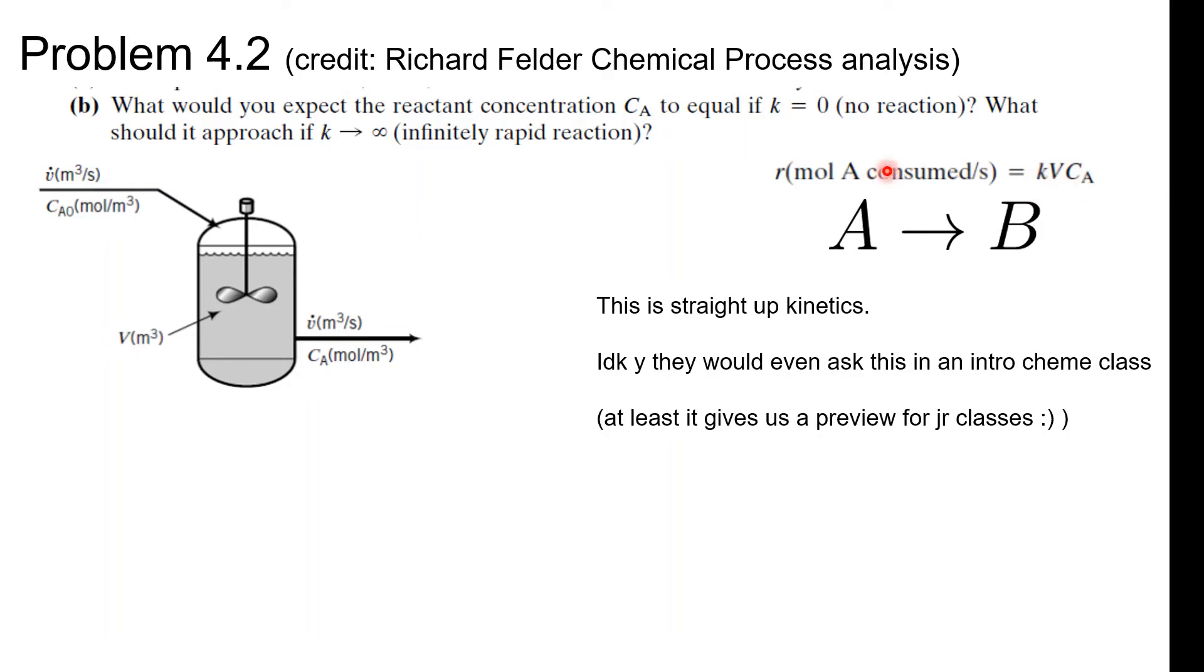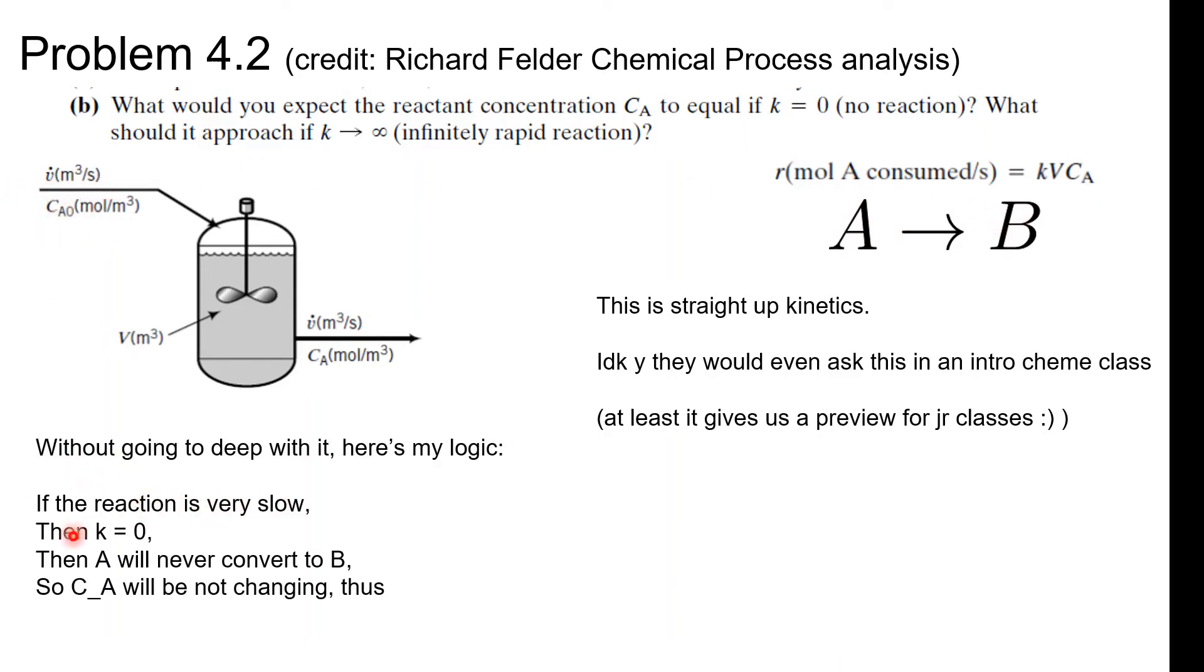Notice how there's this reaction rate constant K, the volume V, and the CA, and notice how it's moles per second. So if K equals zero, there's no reaction, right? So what do you think that means? If K equals zero, then A will never convert to B. If the reaction is very slow, then K equals zero. Thus, A will never convert to B, and CA will not be changing. CA0 will not be changing. Thus, the final concentration will be equal to the initial concentration.